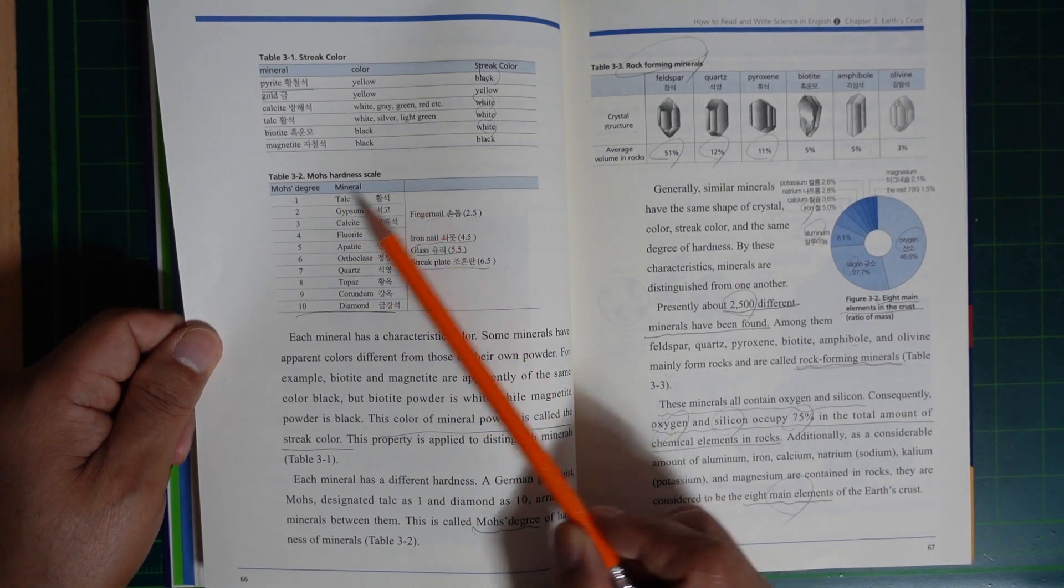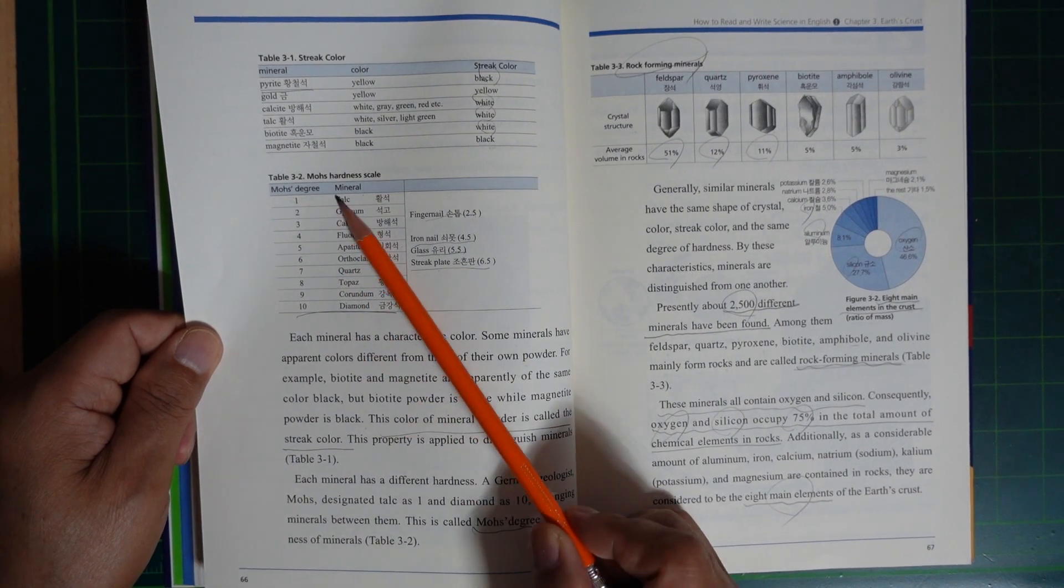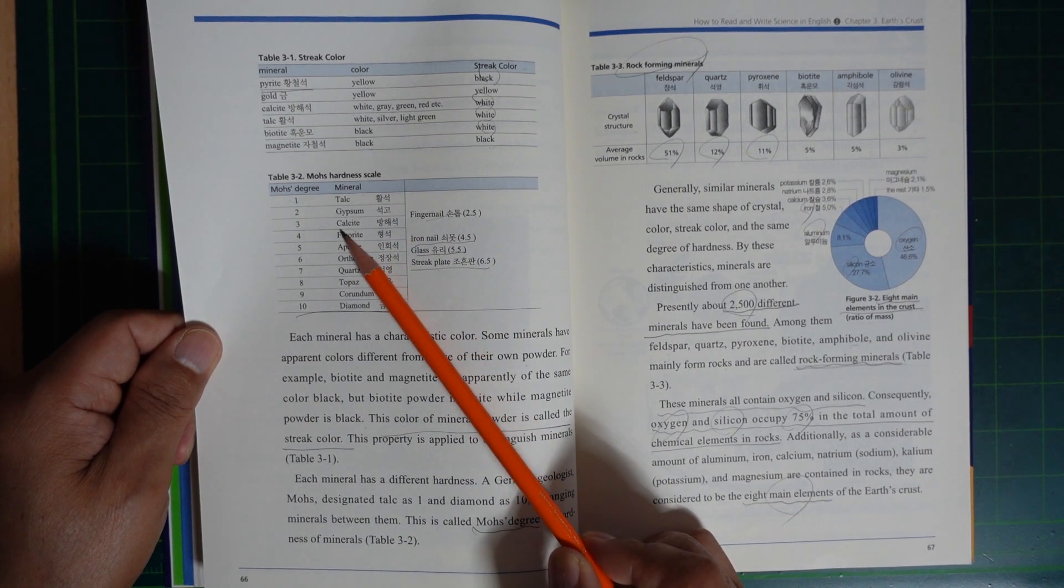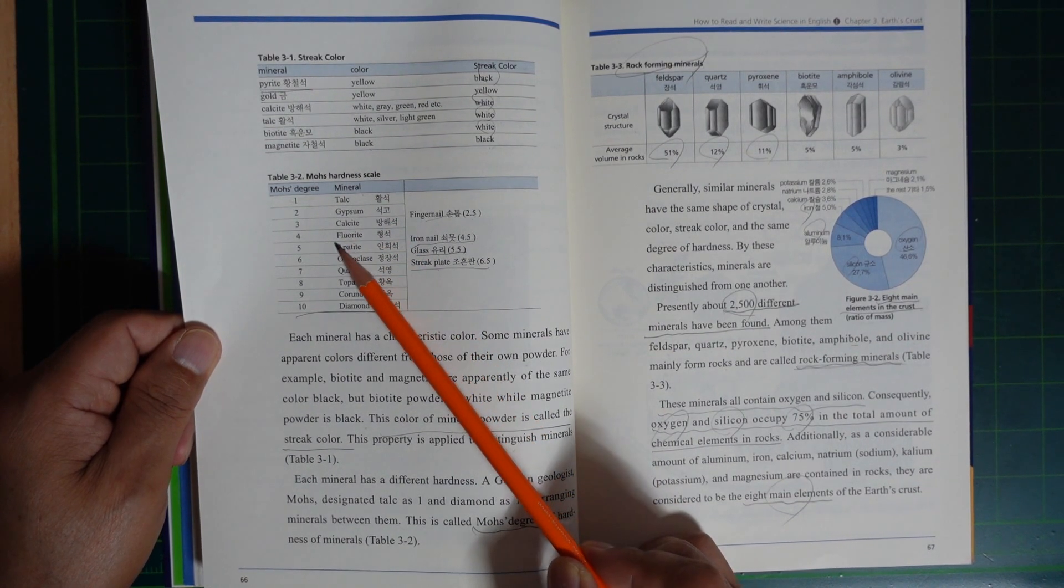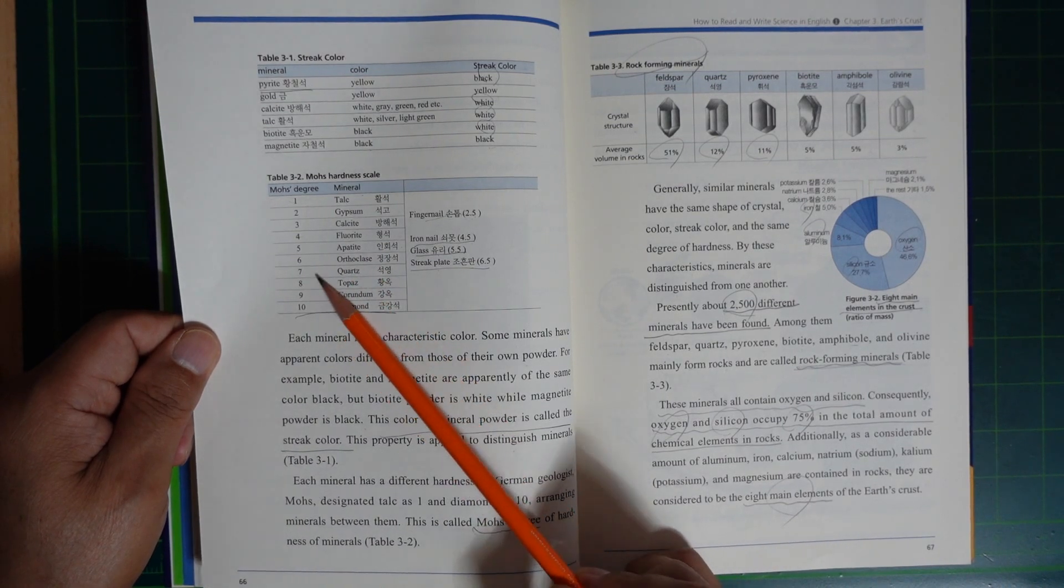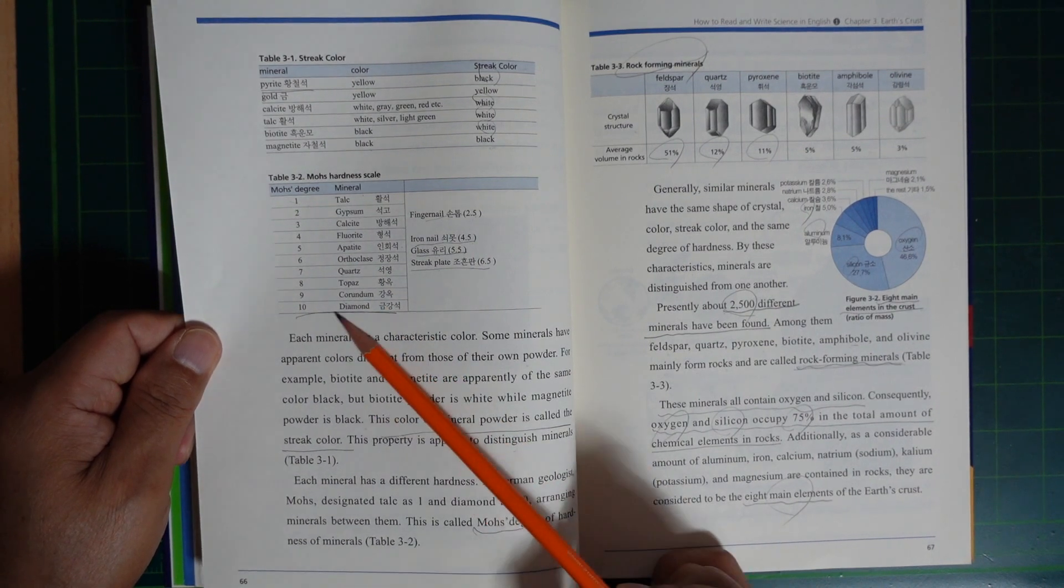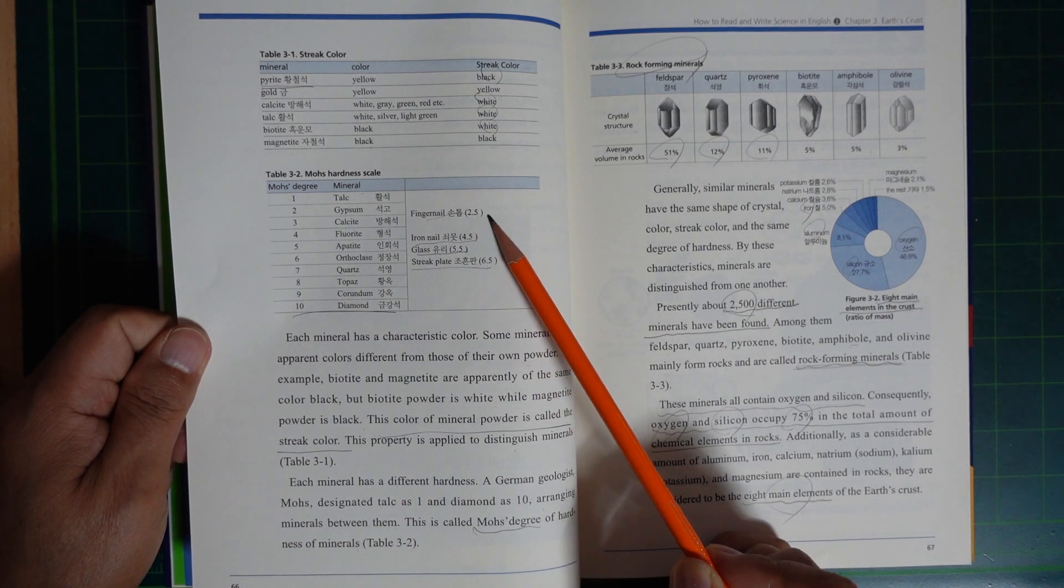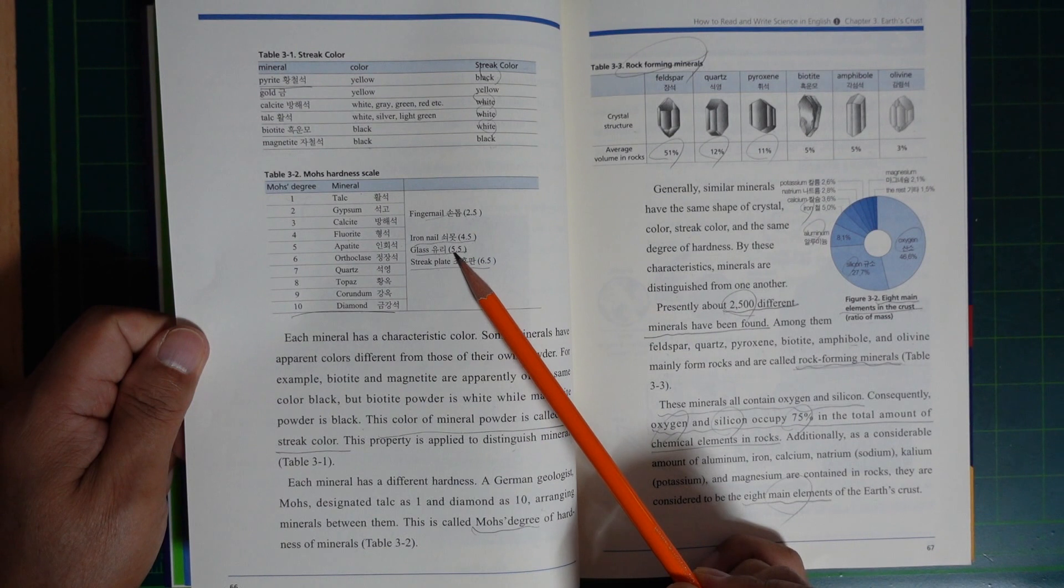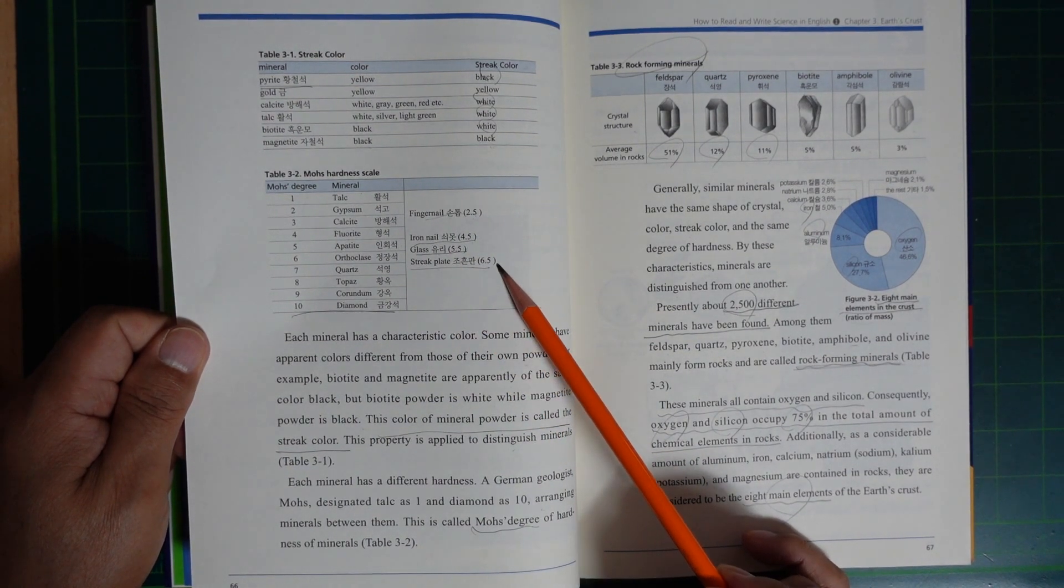Mohs hardness scale: 1 is talc, 2 gypsum, 3 calcite, 4 fluorite, 5 apatite, 6 orthoclase, 7 quartz, 8 topaz, 9 corundum, 10 diamond. For reference, fingernail is 2.5, iron nail is 4.5, glass is 5 to 5.5, and streak plate is 6.5.